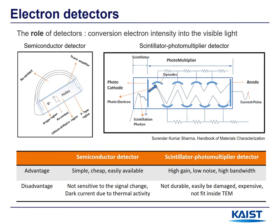The last part is the electron detectors. The role of the detector is to convert electron signals into visible light because electrons are invisible to the naked eye. There are two types of detectors. For semiconductor detectors, electron-hole pairs are generated by the incident electron beam and the detector responds and amplifies the signal. Semiconductor detectors are simple, cheap, and easily available; however, they are not sensitive to signal changes and have problems with dark current. The scintillator-photomultiplier detector converts the electron beam to visible light by a scintillator, and this visible light is amplified through the photomultiplier. It has the advantage of high gain, low noise, and high bandwidth; however, it is not durable, easily damaged, and expensive.